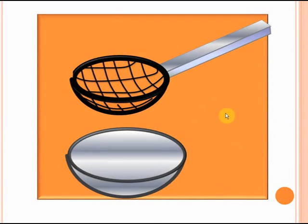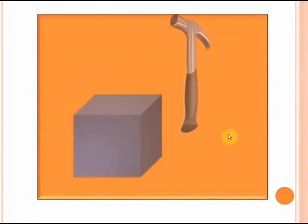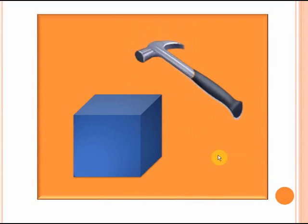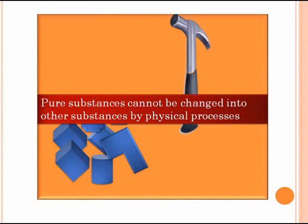Another important characteristic is that pure substances cannot be broken down into other substances by means of physical processes. If you filter a pure substance, you'll still obtain the same pure substance. If you break a pure substance, you will still obtain different pieces of the same pure substance. Physical processes — when I say that I mean breaking, dissolving, cooling, vaporization, using your hands — you just cannot break a pure substance into another substance. Because it's pure. So these are the two important characteristics of pure substances: one, they contain the same kind of particles, and two, you cannot break them to get different other substances.